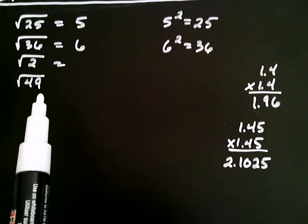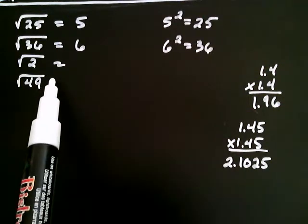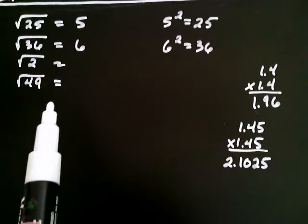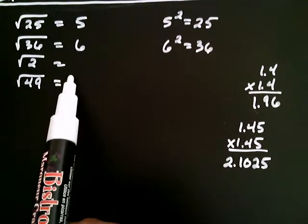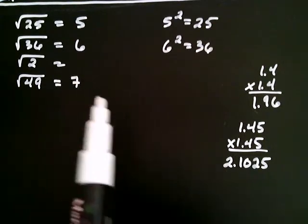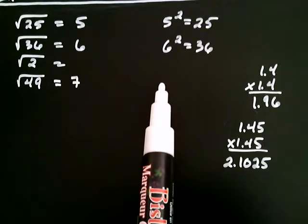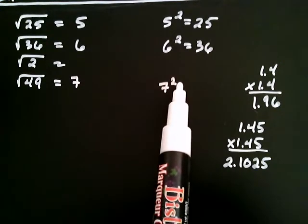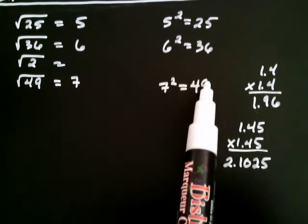So the question is, what is the number that you square to get two? I'm not so sure, but let me go on to the square root of 49. I know the square root of 49 is seven, and of course that implies, just like all the others, that seven squared is equal to 49.